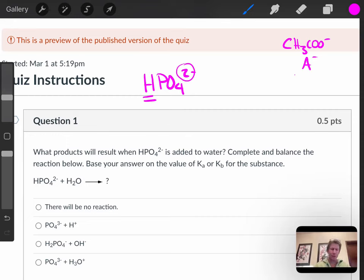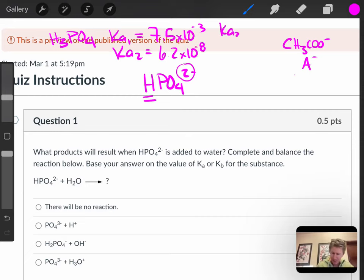Alright, so what I'm going to do is I'm going to go to my Ka, Kb conversion equation sheet, and I've got it. So here's phosphoric acid. Phosphoric acid has Ka1 equals 7.5 times 10 to the minus 3, Ka2 equals 6.2 times 10 to the minus 8, and Ka3 equals 4.2 times 10 to the minus 13.